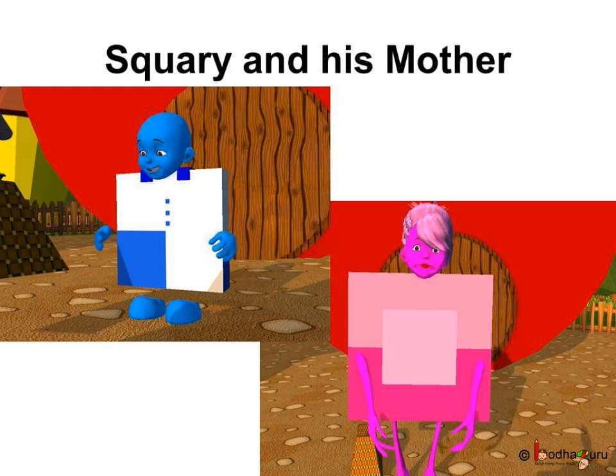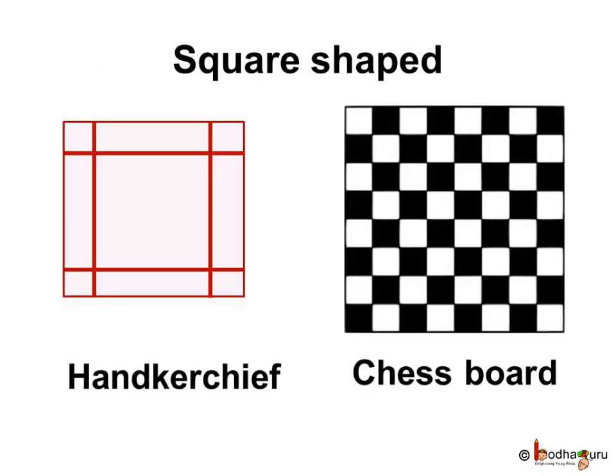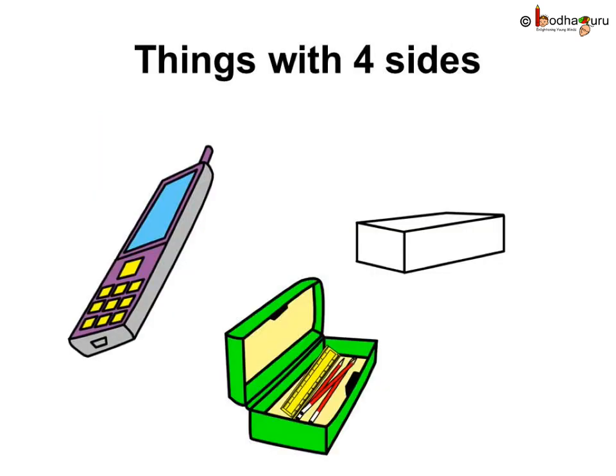Remember Squary and his mother? They were squares only. All sides equal. So, now you can say the handkerchief, chess board and even dice and gift box have square shape as they have four sides and all sides are equal.